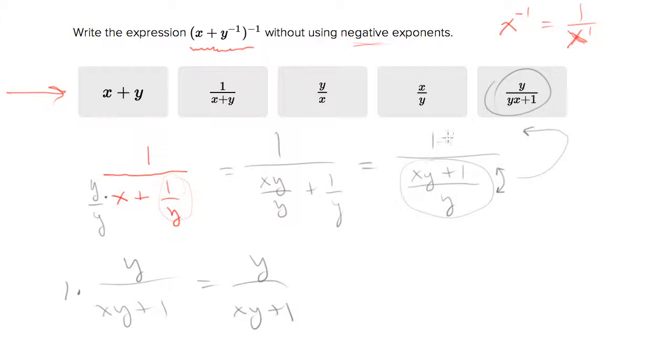Now, if this step right here, going from that one to that one, confused you, it's just because I have something memorized that you don't. I just took the denominator, the fraction of the denominator, flipped it upside down, and multiplied it by the numerator.